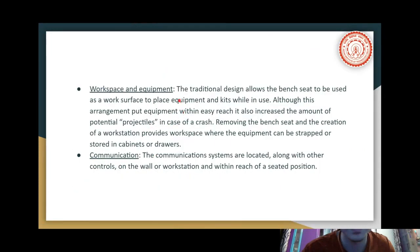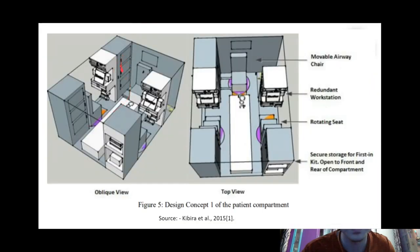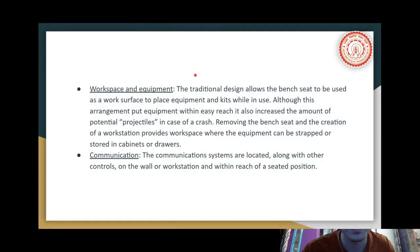For workspace and equipment, the traditional design allows the bench seat to be used as a work surface, but this increases potential projectiles in a crash. Removing the bench seat and creating a dedicated workstation where equipment is secured in cabinets eliminates this hazard. Regarding monitors, since multiple people work at different angles trying to view the same monitor is very difficult, having a monitor on each side — for example monitoring a patient's ECG — is far more practical than a single monitor on one side.